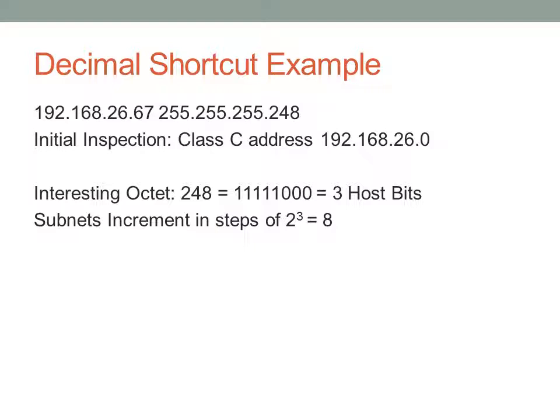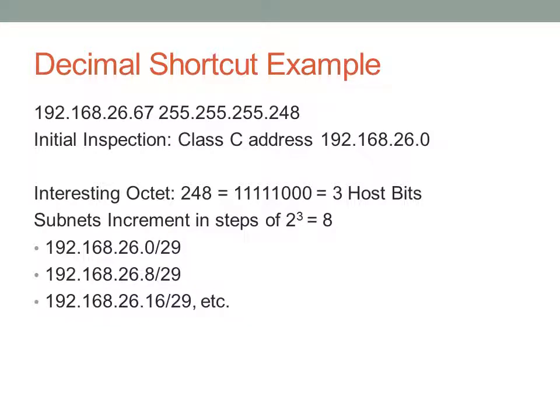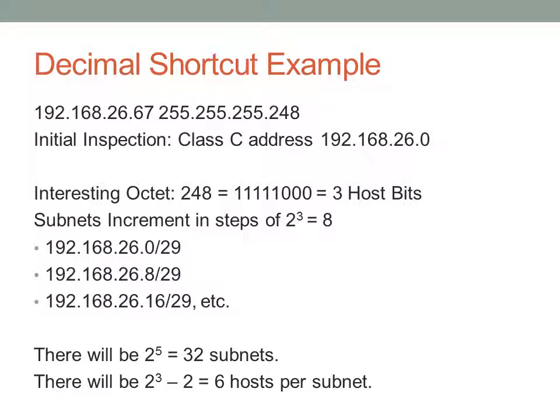The magic number tells us how the subnets increment in steps — subnetworks will fall on multiples of 8. Looking at the network 192.168.26.0, our first subnet is the zero subnet, the second will be .8, then .16, and so on — these are all subnet network addresses. There will be a total of 2 to the 5th, which is 32 subnets (since there are five subnet bits borrowed). Under RFC 950, if zero and broadcast subnetting were not allowed, there would be 30 subnets. There will be 2 to the 3rd minus 2, that's 6 hosts per subnet.